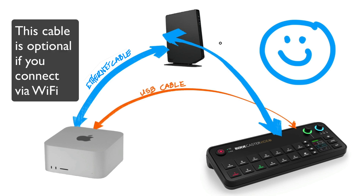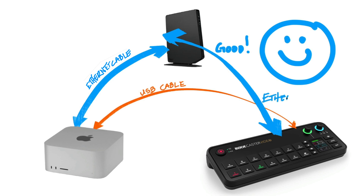I realized I needed to connect my router directly to the RODECaster video via ethernet. I could leave the other connection via ethernet to my Mac, but that wasn't the important part. The important part was getting the RODECaster directly connected via ethernet. So I ordered a 50-foot ethernet cable, it came the next day, I plugged it in, and everything worked perfectly. I'll leave links to RODE's own instructional videos so you can dive deeper if you want the full breakdown.